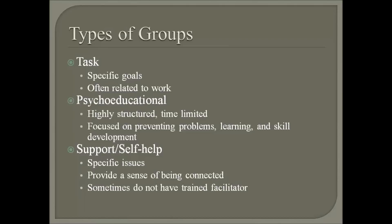The first type of group is a task group and these groups focus on specific concrete goals and they're often related to work environments. Task groups attempt to harness the positive productive processes of group dynamics to achieve specified goals. The content of the group is focused on achieving the goal and not on any real interpersonal dynamics that may occur. These groups are traditionally discussion based and involve decision-making skills and problem-solving skills. Common examples of a task group would be ad hoc committees — that is committees designed to achieve a specific goal — or product development.